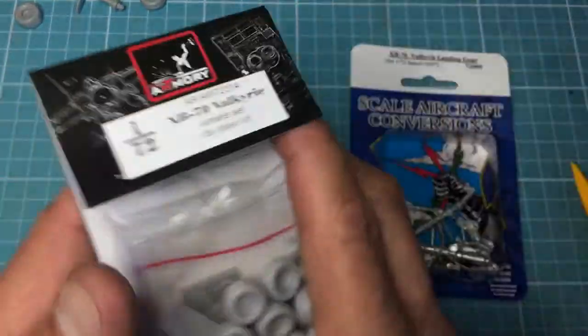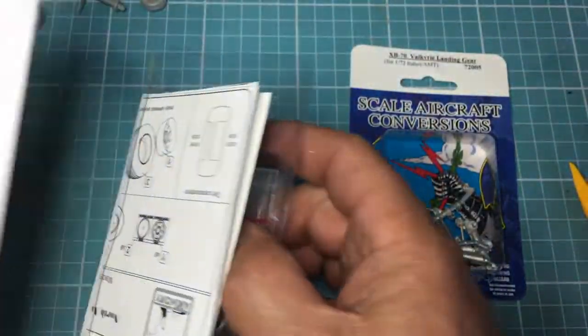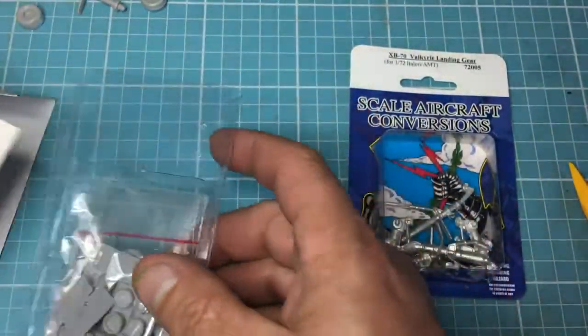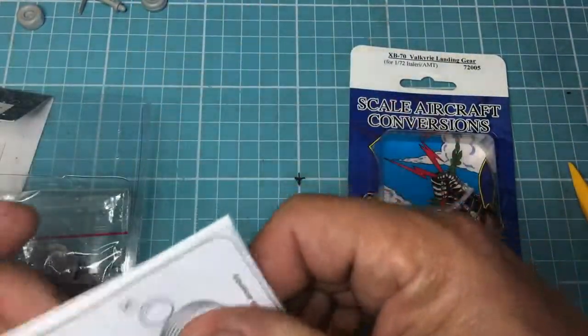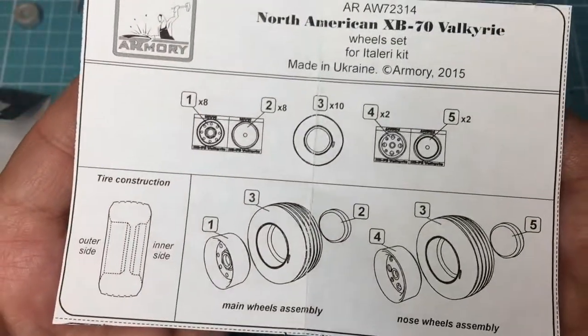I pulled the staples out so I could get this open easier. I haven't looked at this myself, so this is my first time. We've got an instruction manual here - just one sheet of paper, so you can see that there.